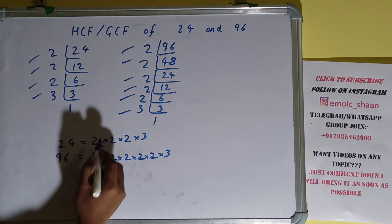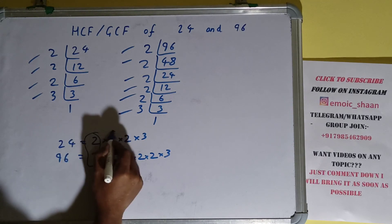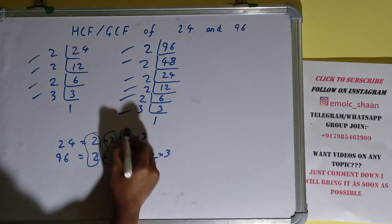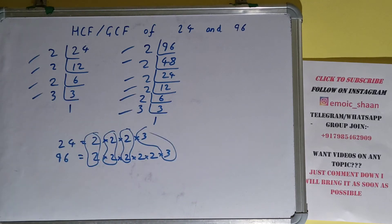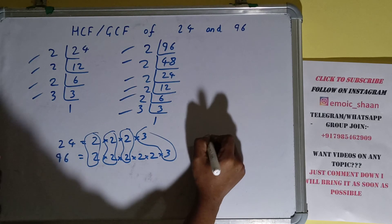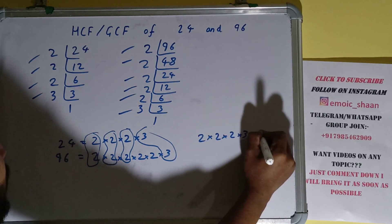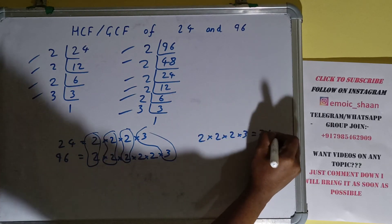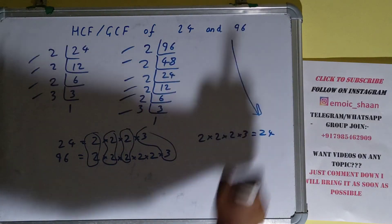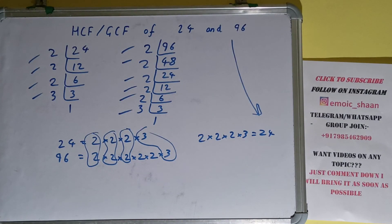The next thing we need to do is circle out the common prime factors. We have this 2 in common, this 2 in common, this 2 in common, and this 3 in common. We don't have anything extra in common among the factors of the two numbers. So the answer will be 2 × 2 × 2 × 3, which is 24. So the HCF or the GCF of 24 and 96 is 24. If you found the video helpful, please hit the like button, consider subscribing, and thanks for watching.